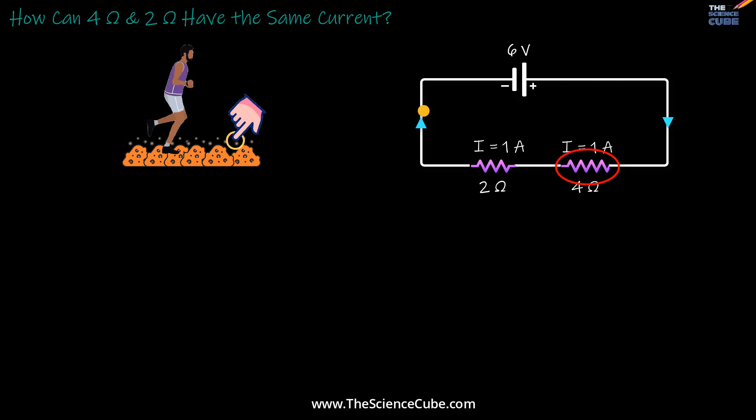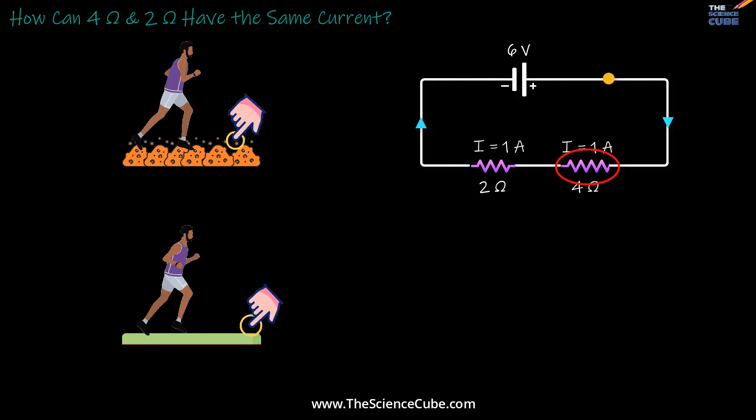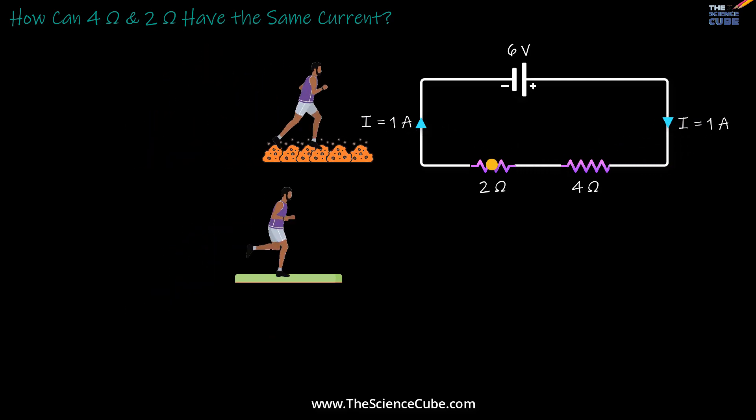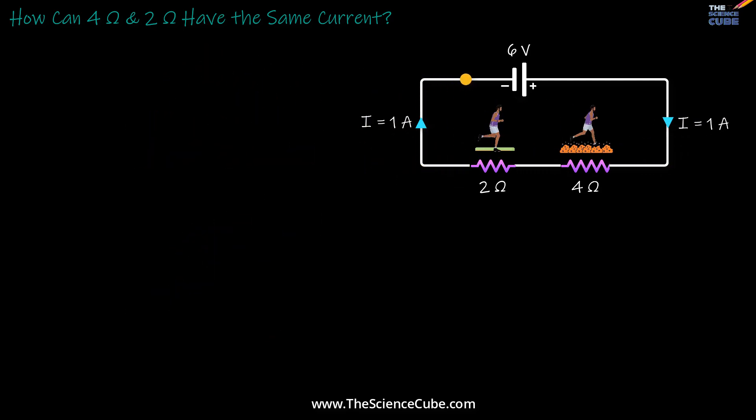Kind of like here we're running through mud versus here, which is more like running on solid ground. Shouldn't the current slow down in this muddy resistor?